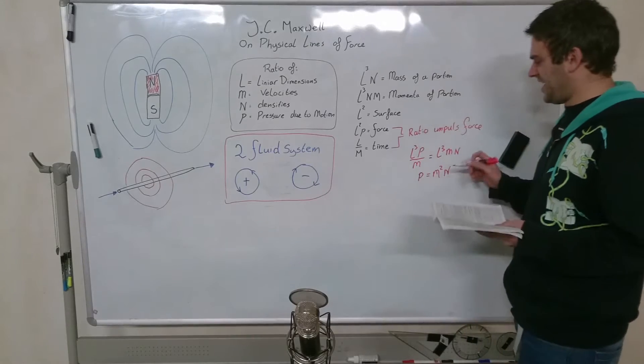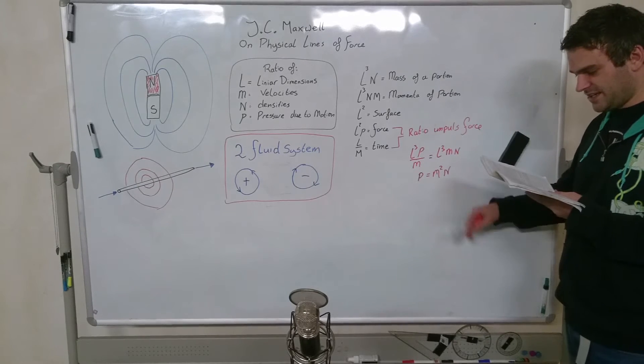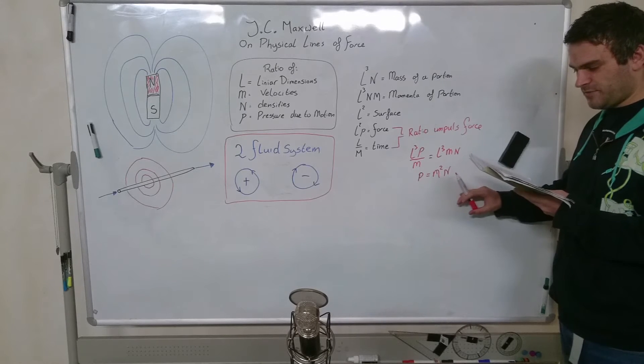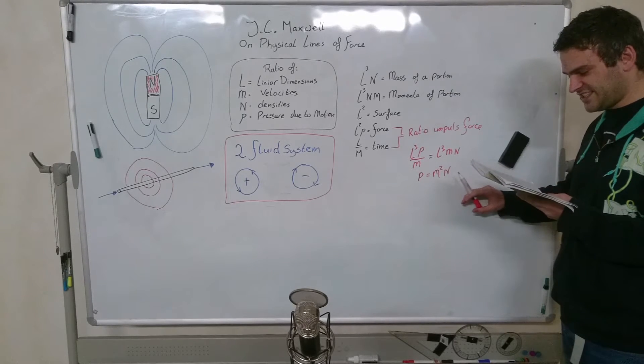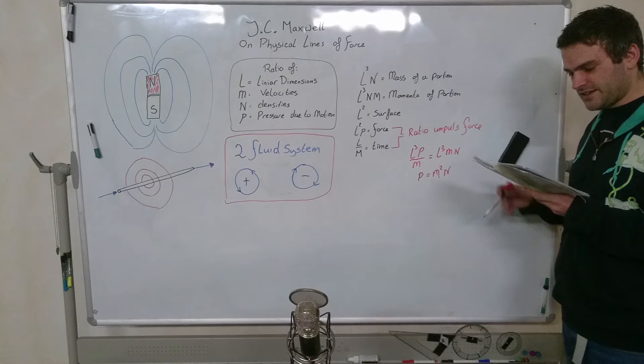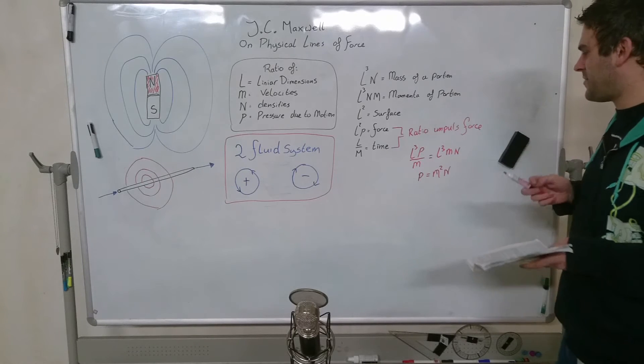What this actually says is that the ratio of pressure due to the motion P is compound of the ratio of density N and the duplicate ratio of the velocity M squared. And it does not depend on the linear dimension of the moving systems. So pressure has nothing to do with the linear dimensions.